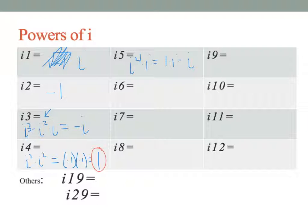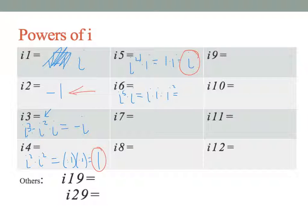i to the sixth can be defined as i to the fifth times i. i to the fifth is i, so this is i times i, which is i squared, which equals negative 1. After working through these for a while, you'll find the powers of i are cyclical.